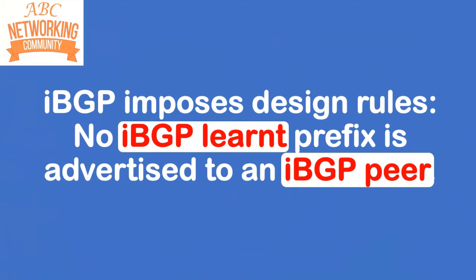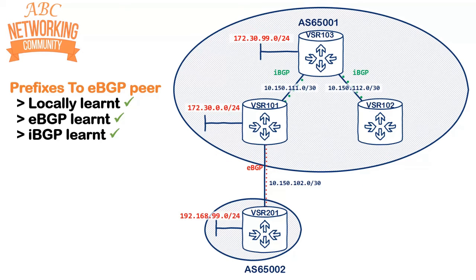IBGP actually imposes design rules rather than using an attribute in BGP updates. The design rule for IBGP is that no IBGP-learned prefix is advertised to an IBGP peer. The key important points are that it is the IBGP-learned prefixes and it is the advertisement to IBGP peers. Here's a diagram of my network — I'm using VSRs on my laptop. We've got three nodes within a single AS: VSR65001, VSR101, 102, and 103, configured as shown.